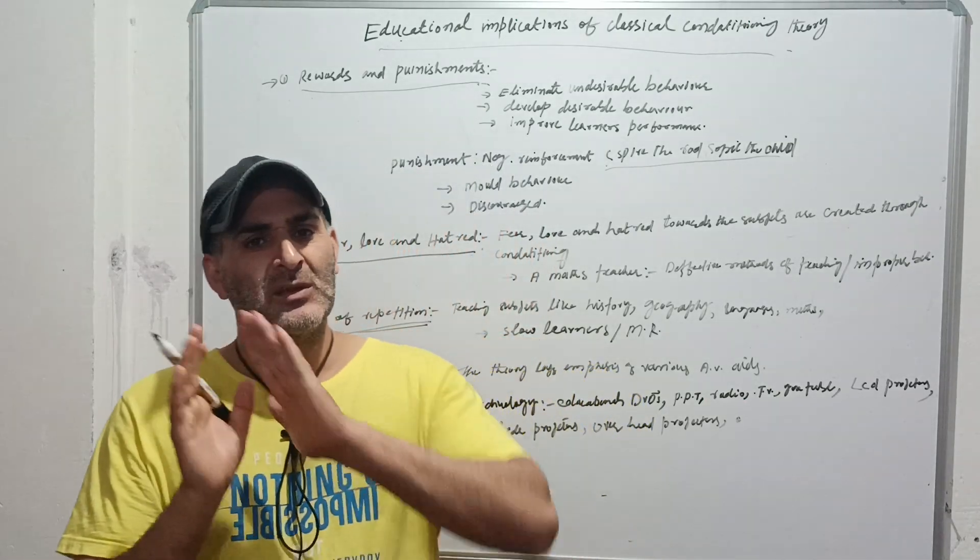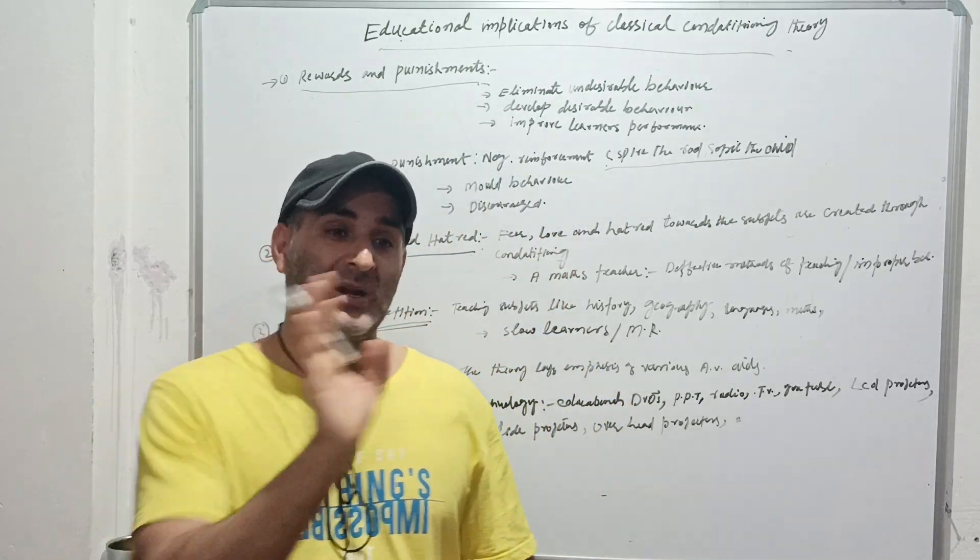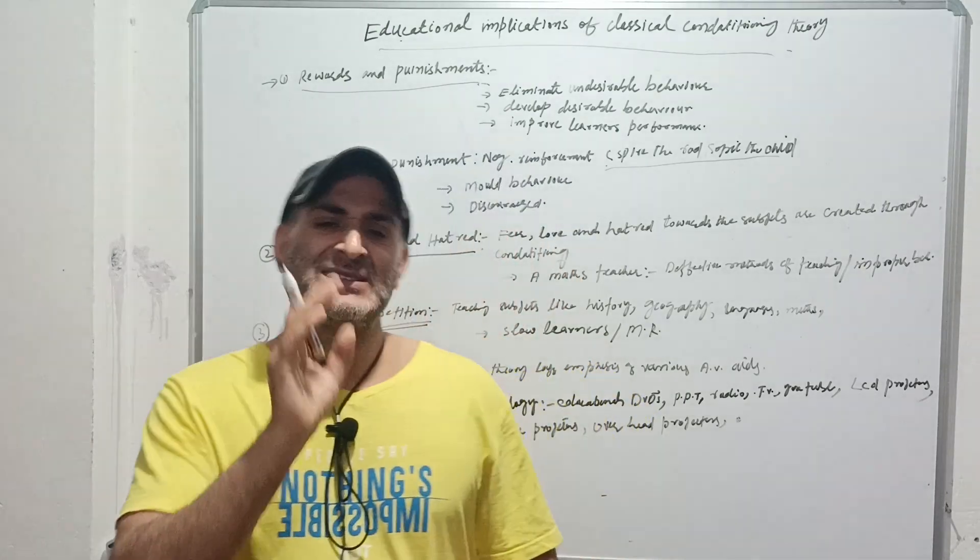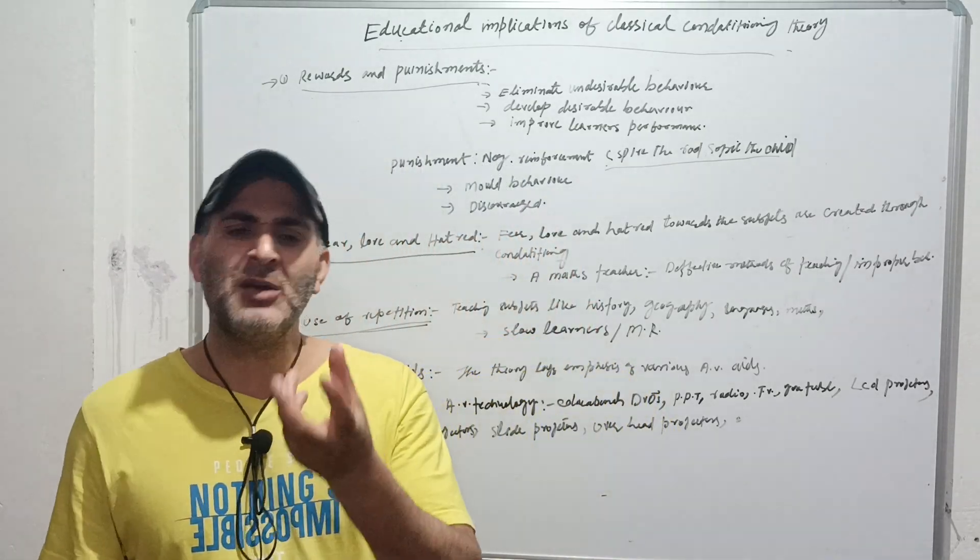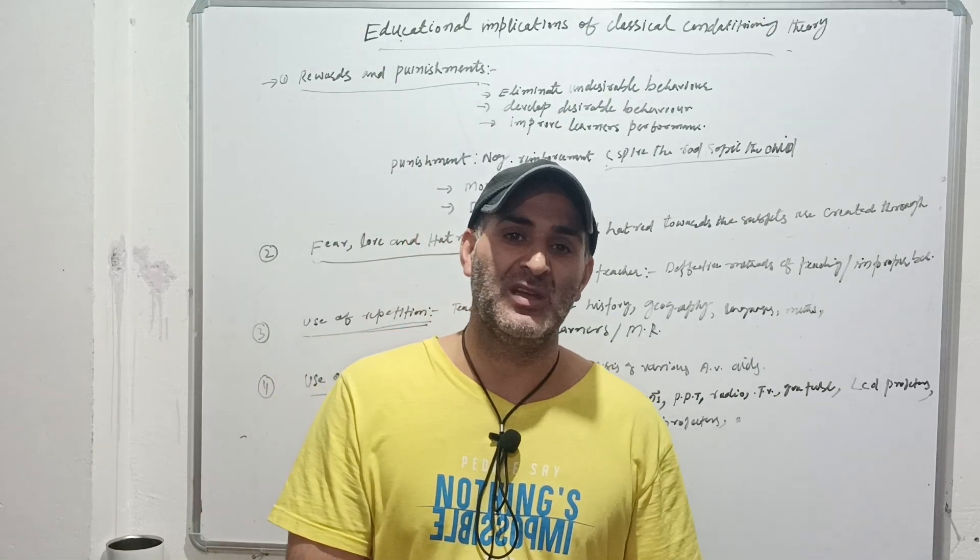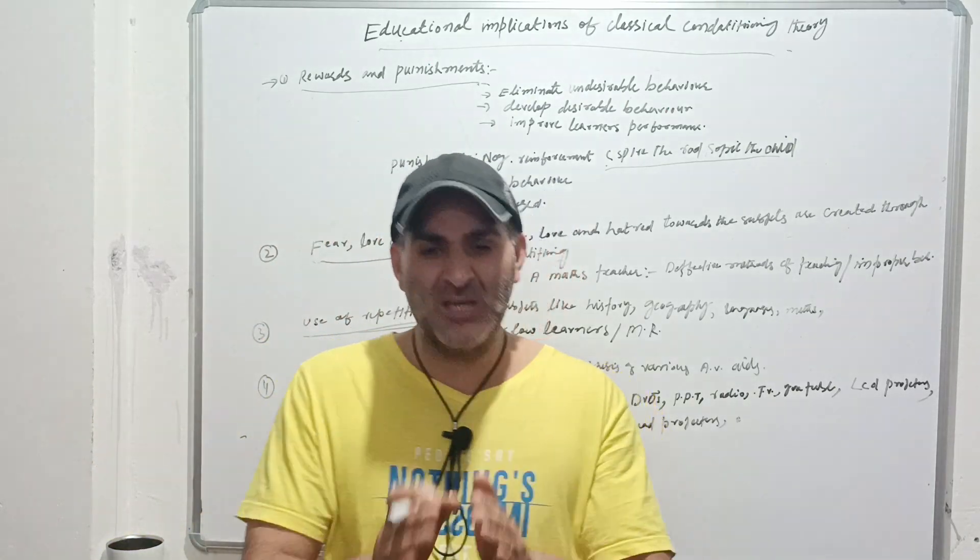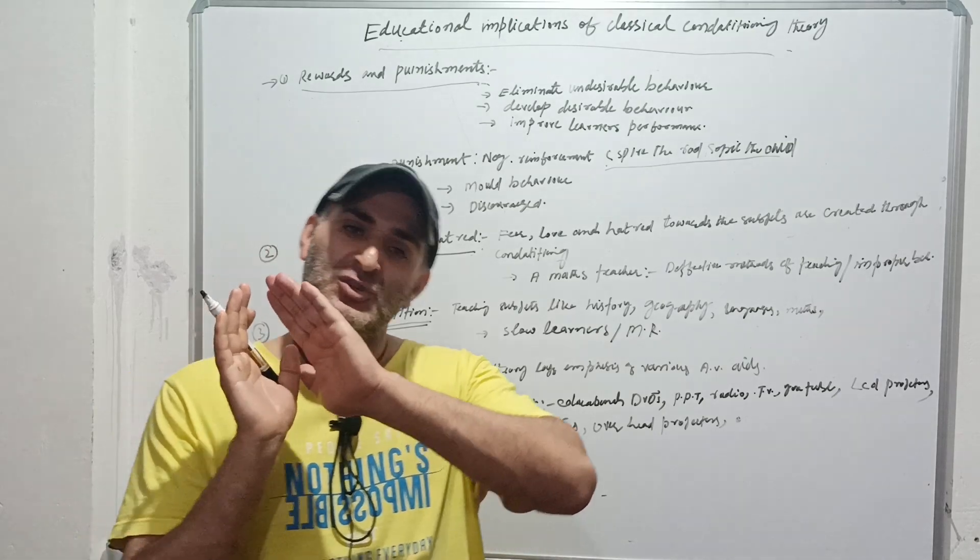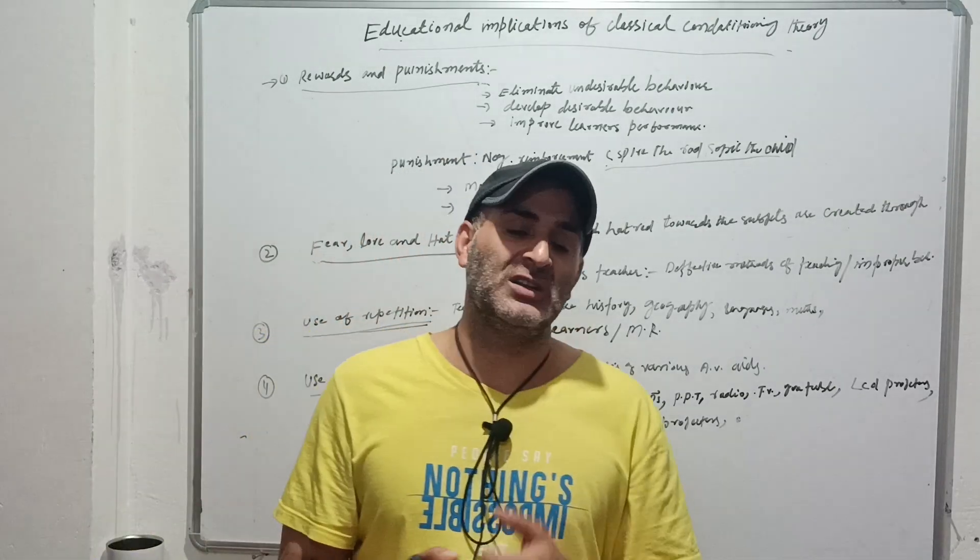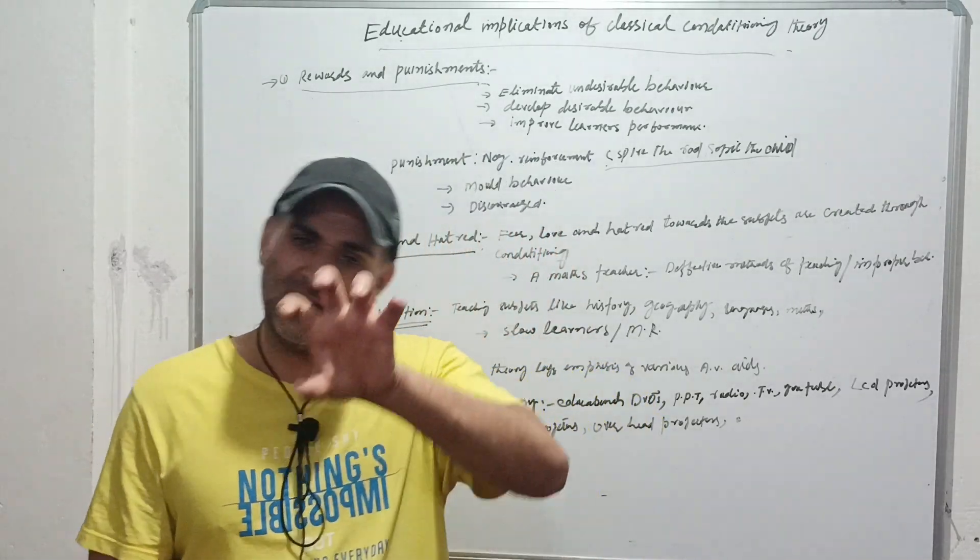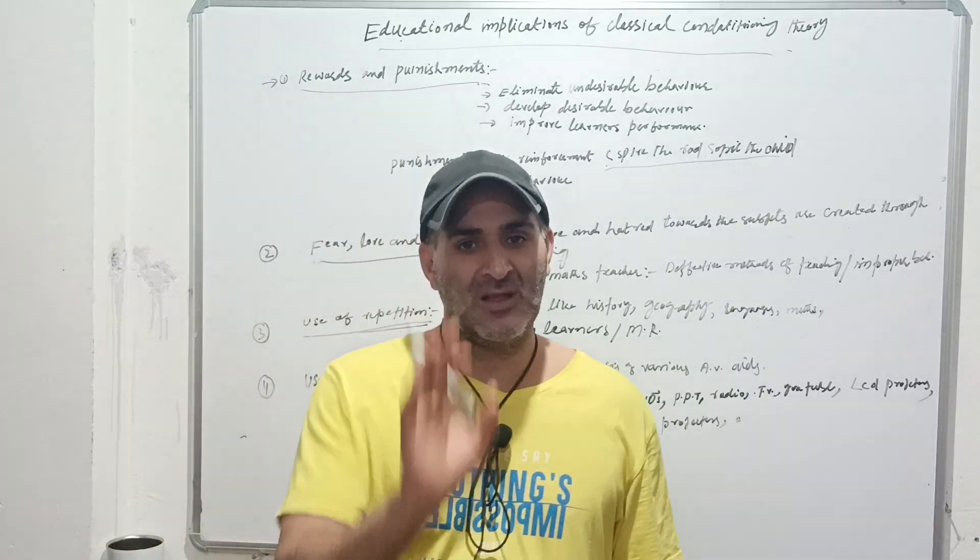When a teacher deals with slow learners or teaches mentally retarded children, especially drill method helps the slow learners and mentally retarded children. Because as we already discussed, these children have cognitive deficits. That is why we should focus on drill method so that we will get better and positive results.